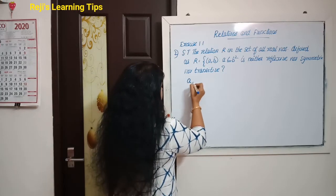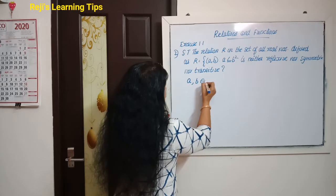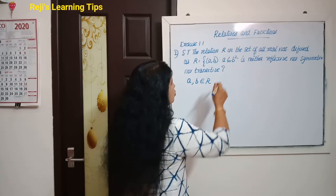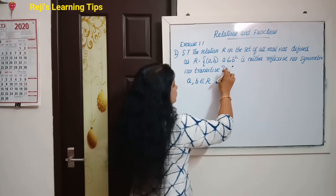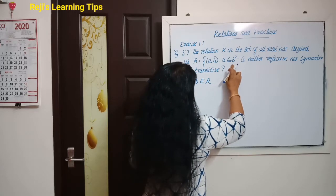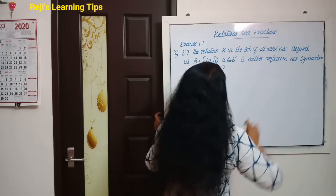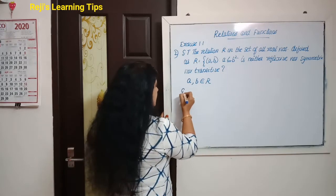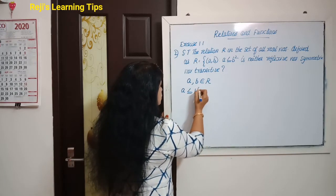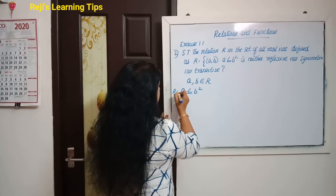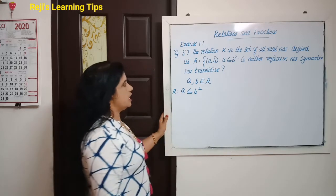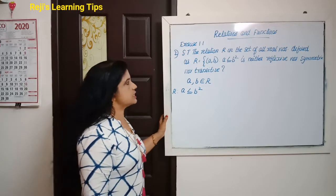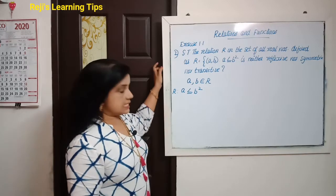Here a and b belong to real numbers. We need to prove that the relation a ≤ b² is neither reflexive nor symmetric nor transitive.